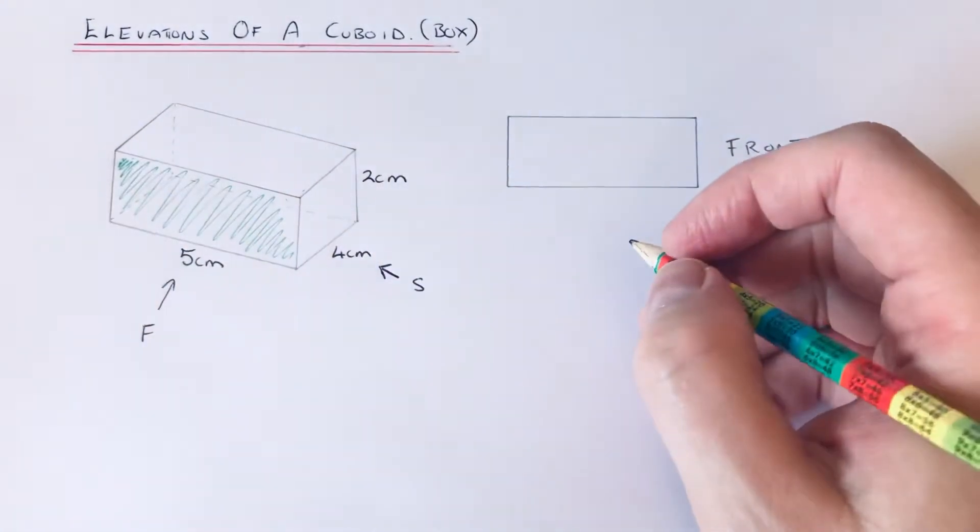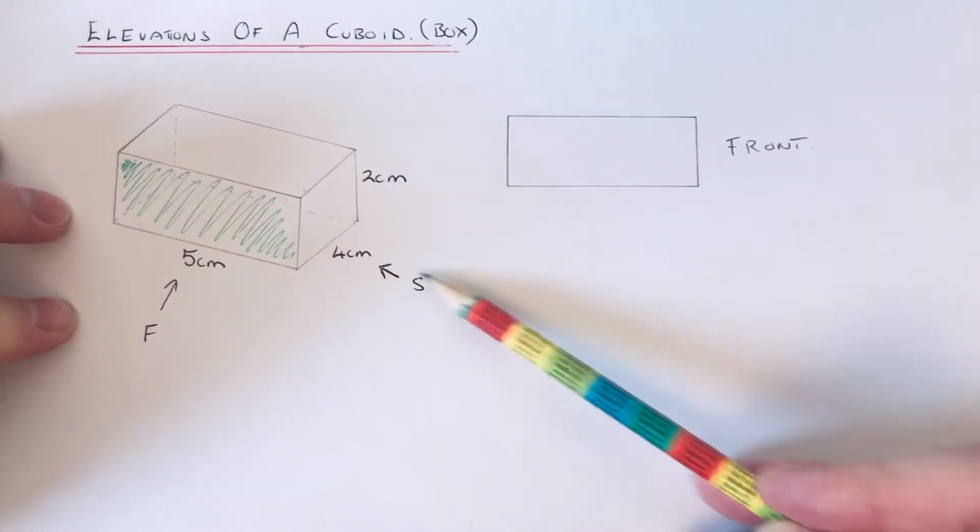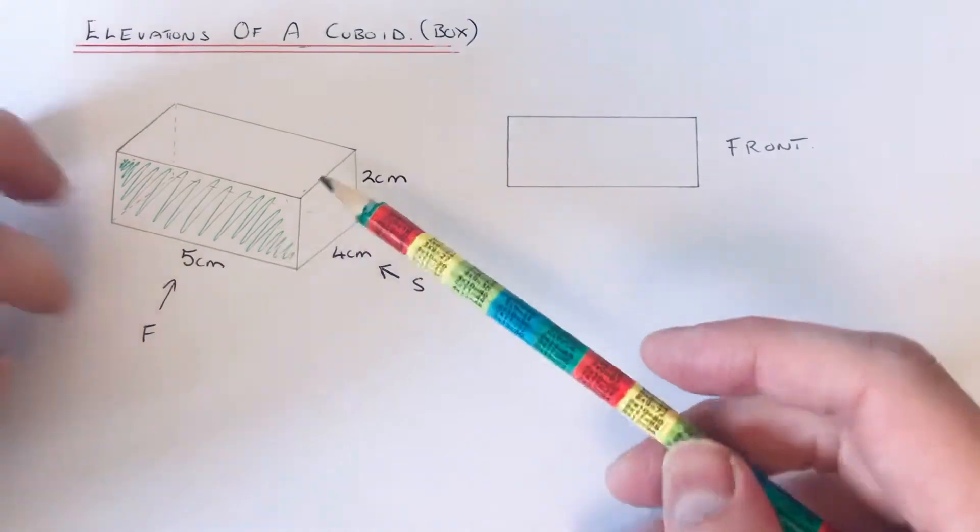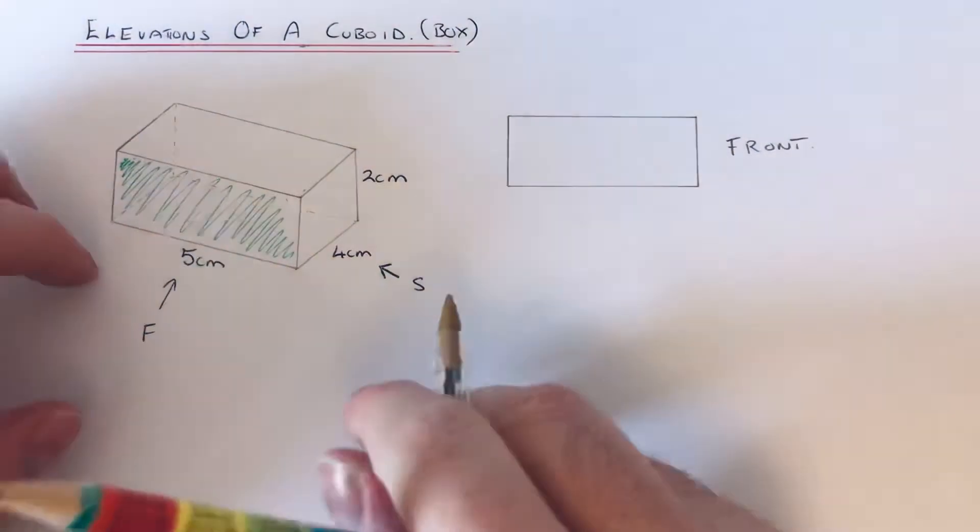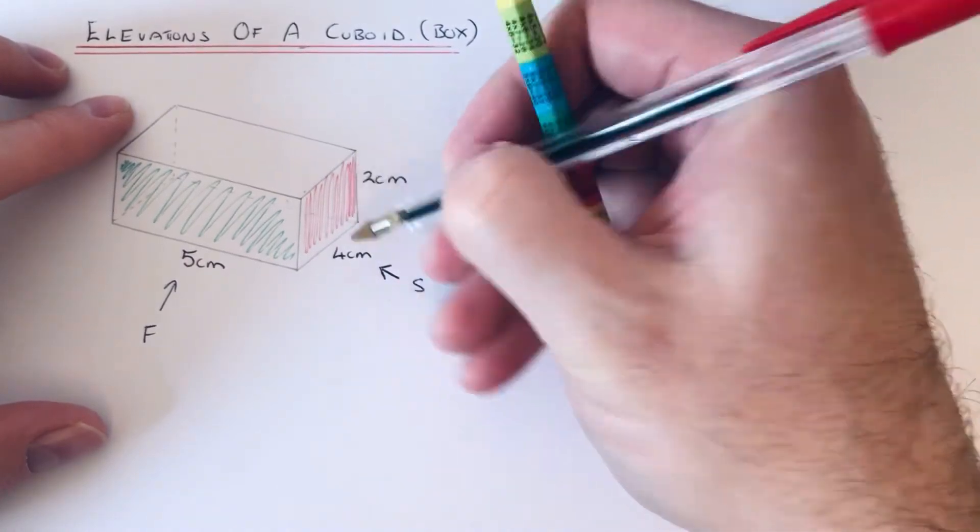So let's do the side elevation next. The side is what you're looking at if you're standing on the ground looking in this direction here. What you're going to see is a four by two rectangle, so I'll just show this one in here.